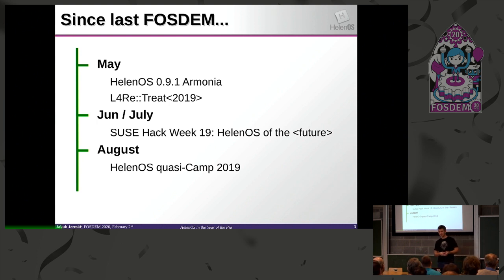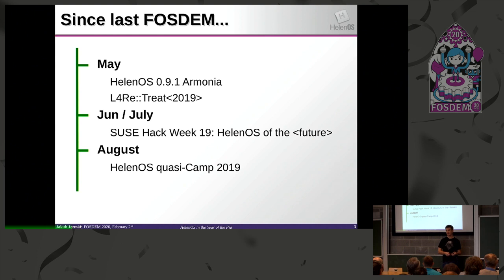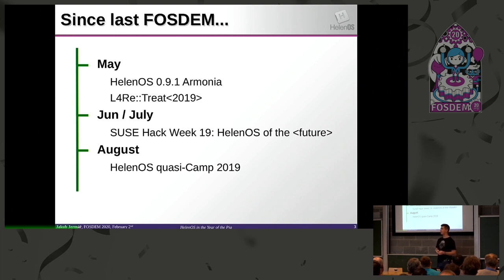I also participated in the L4RE retreat, where I worked on making HelenOS work on the L4RE hypervisor on x86. In July there was the SUSE hack week, where some of our developers worked on implementing the standard C++ library future header. And in August there was the biggest HelenOS event of the year, the HelenOS camp. This time it was only three people, and no children and no spouses were involved, so we call it a quasi-camp. But it produced most of the topics for this talk, so it was important.